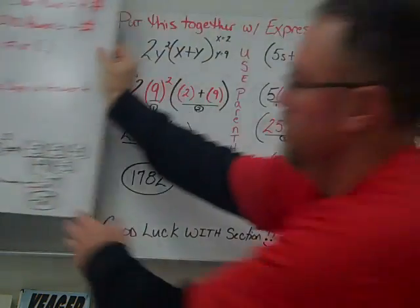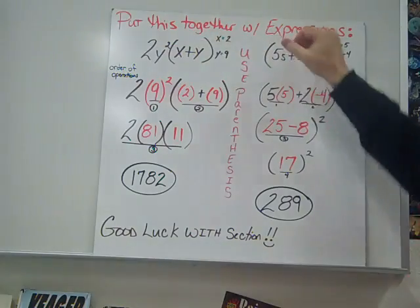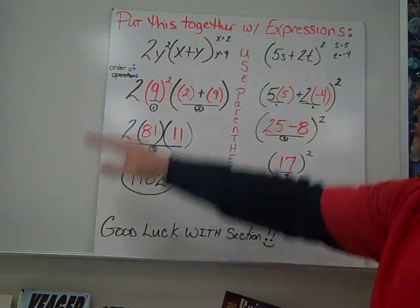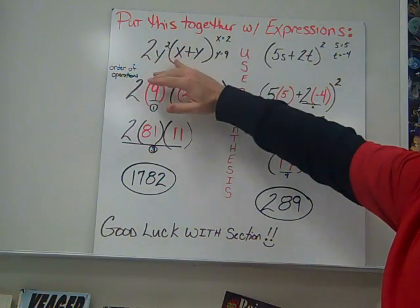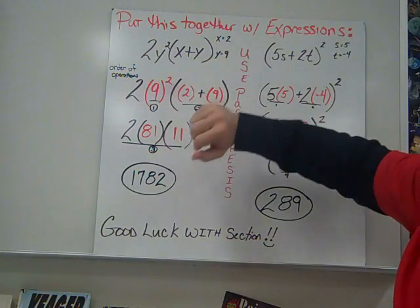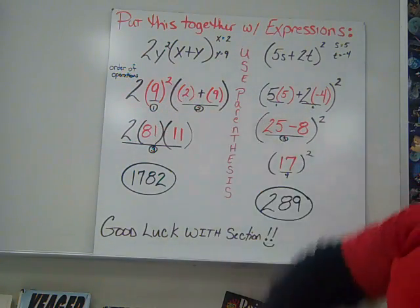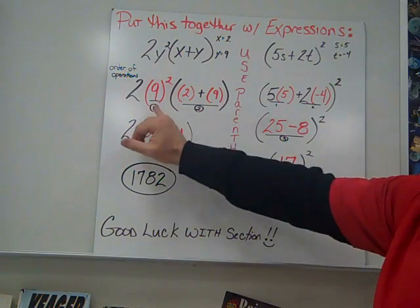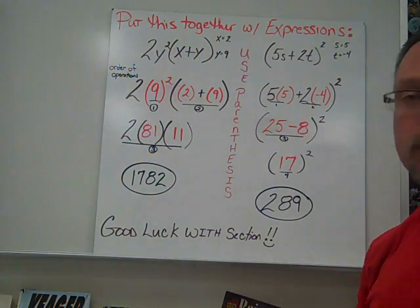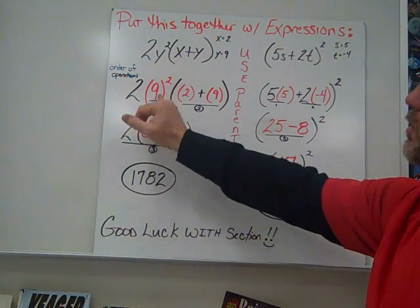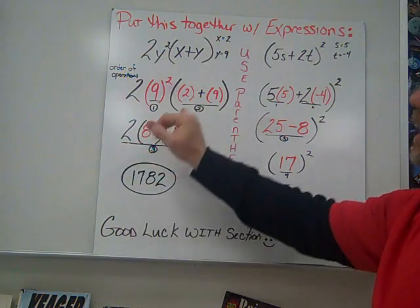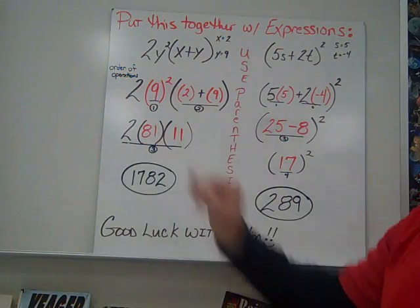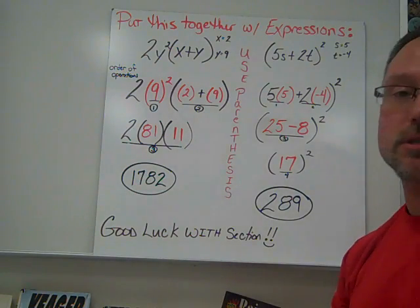The last thing for this section is you're going to solve with expressions. Use parentheses for your letters when you substitute your numbers. So our first example, 2y squared, x plus y, x is 2, y is 9. So now I'm going to put my numbers in for my letters. I'm going to use parentheses. So I have 9 squared, 2 plus 9. Now it's just an order of operation problem. I'm going to do this first. So 9 squared gives me 81. The 2 comes down. I'm going to take care of what's inside the parentheses. 2 plus 9. That gives me 11. And then I'm going to multiply them across to give me 1782.